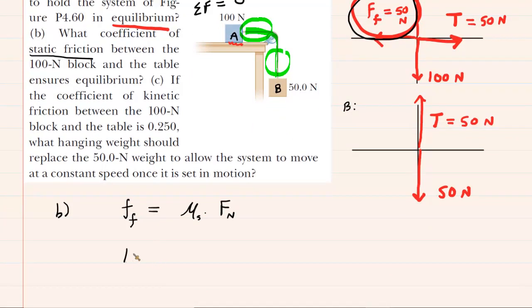We'll have 50 newtons. And then this is equal to the coefficient of static friction multiplied by the normal force. And then you simply divide both sides of the equation by the 100 newtons so that it cancels out on the right-hand side.